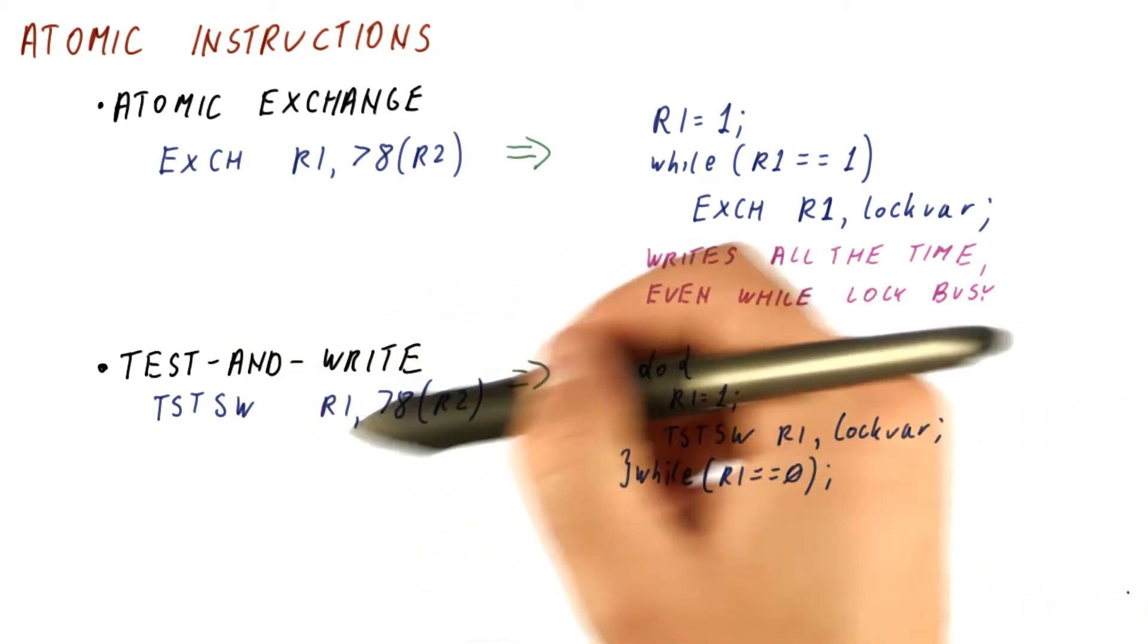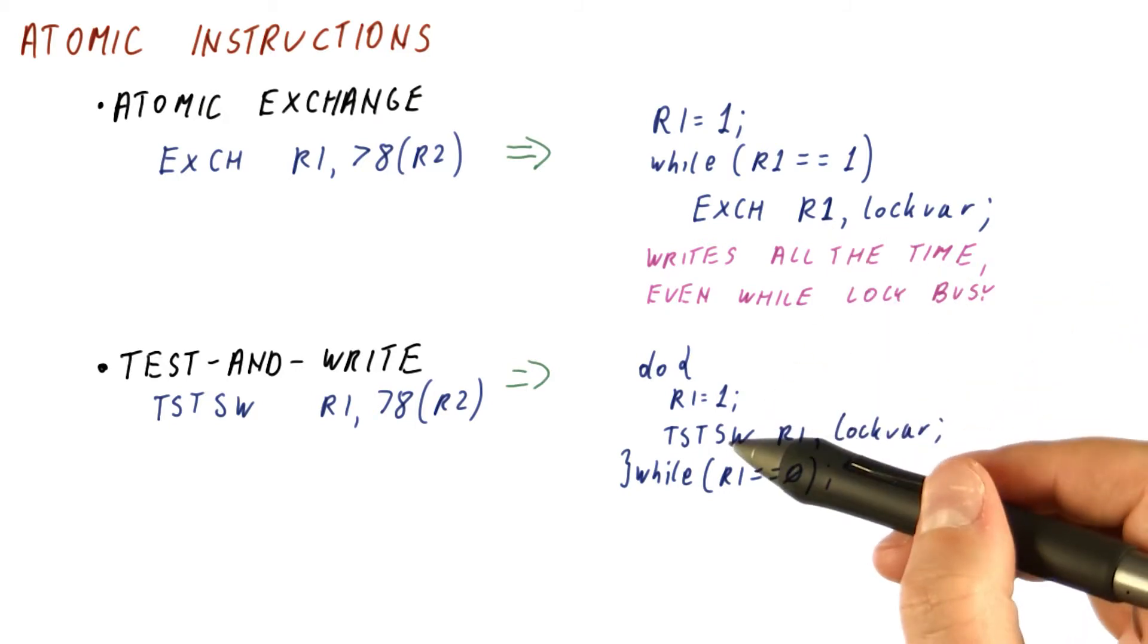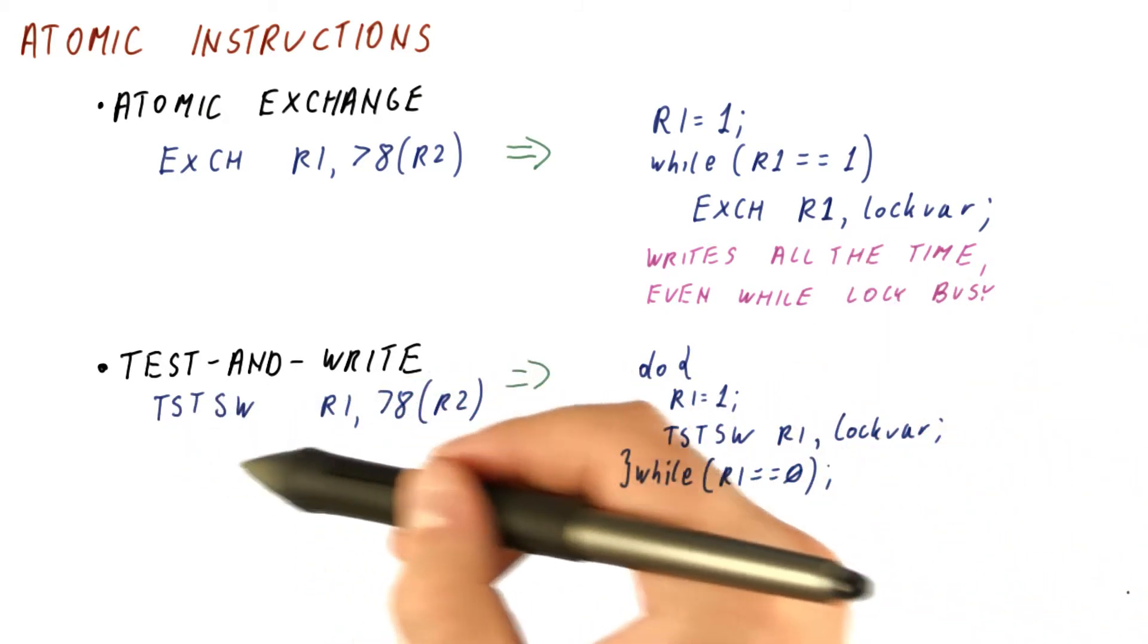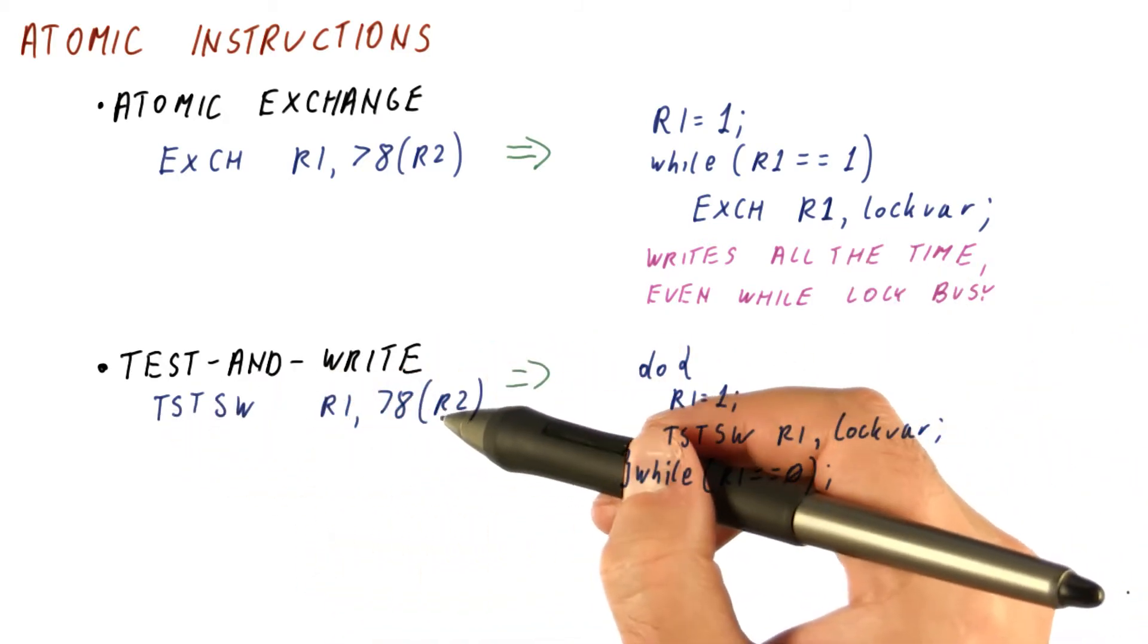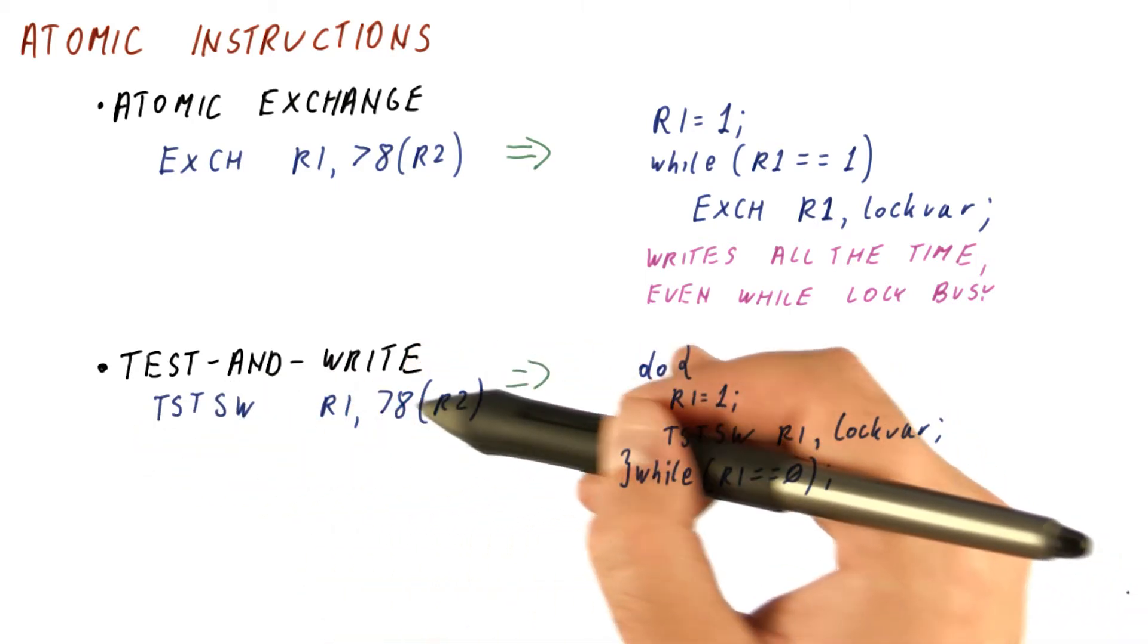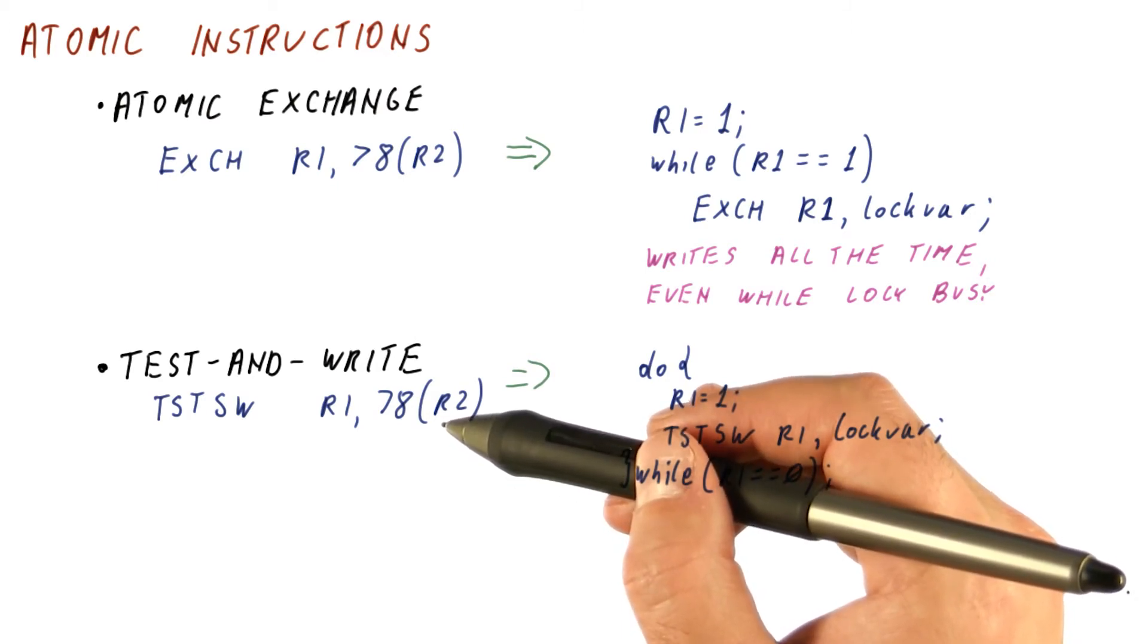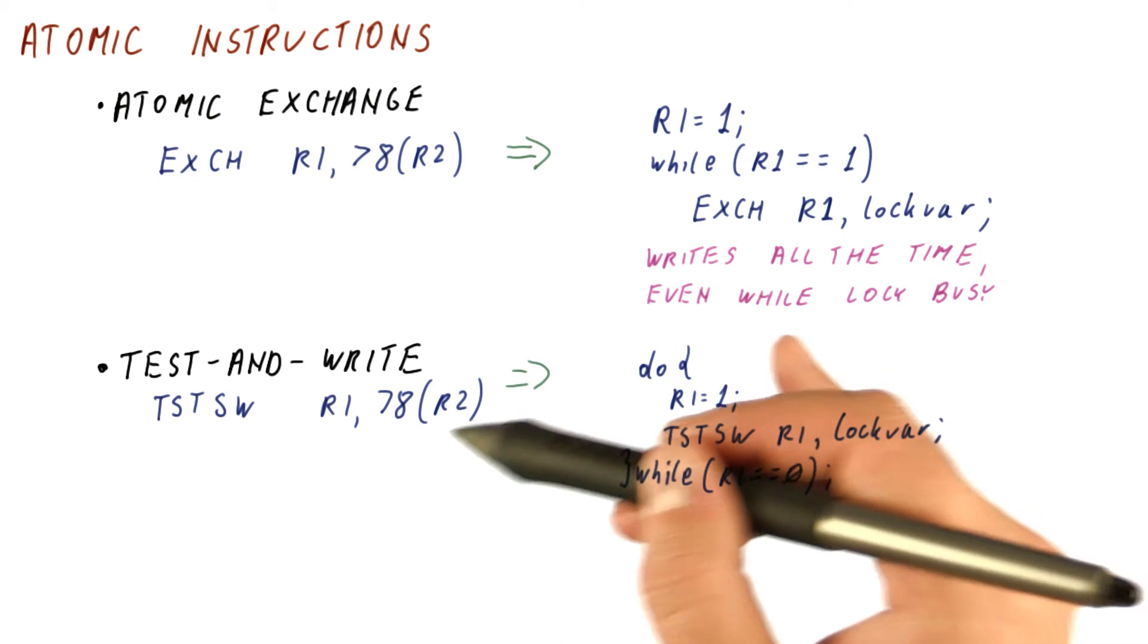So this test and write approach solves the problem of continuously writing to the lock variable, but doesn't really solve the problem of this is a really strange instruction. It's neither a store nor a load. It would be ideal for processor design if we could do something that is very much like a load and very much like a store, yet behaves this way.